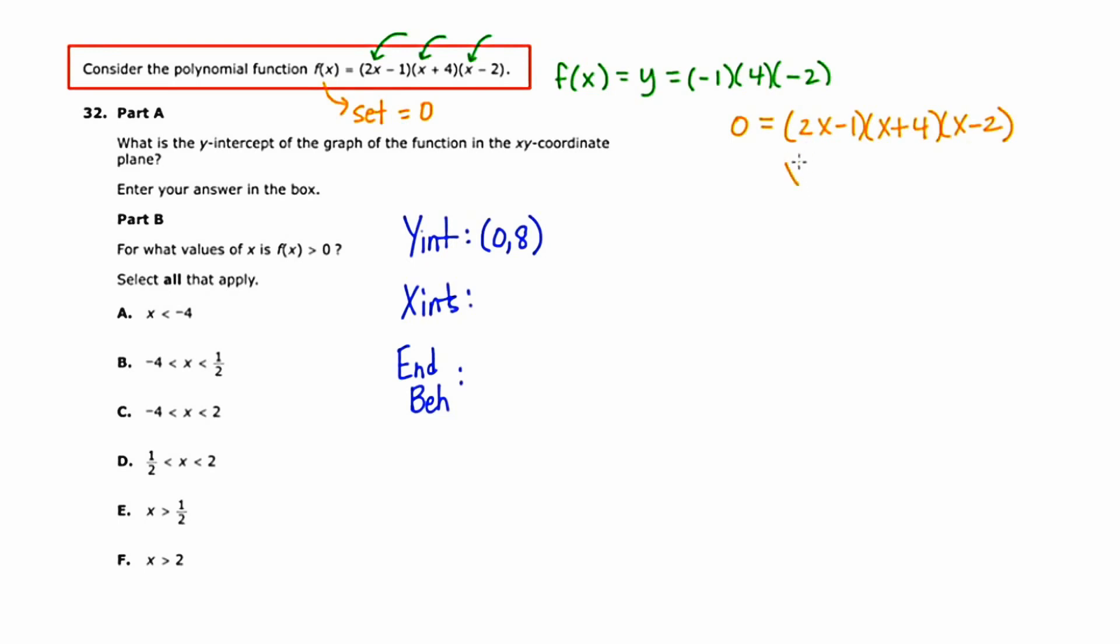In the first case, I'm going to end up with x = 1/2. In the second case, I'm going to end up with x = -4. And in the third case, I'm going to end up with x = 2. So these three answers suggest three x-intercepts: (1/2, 0), (-4, 0), and (2, 0).